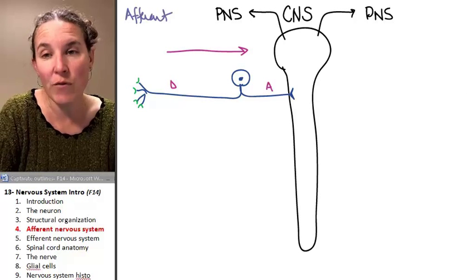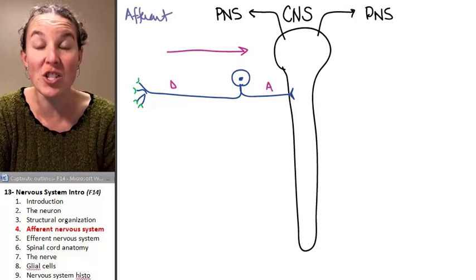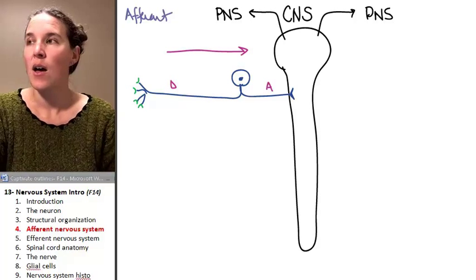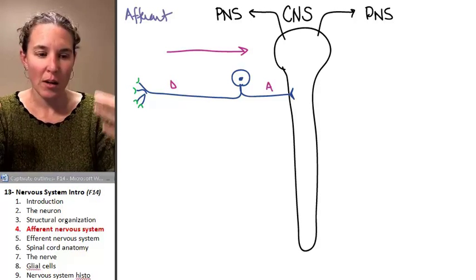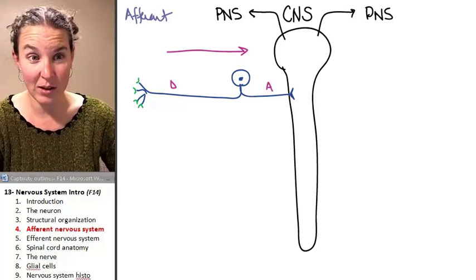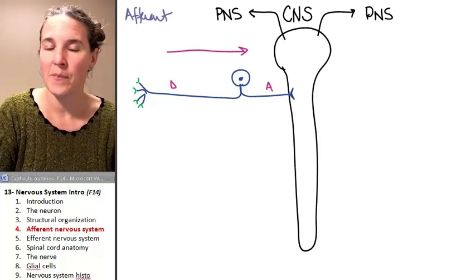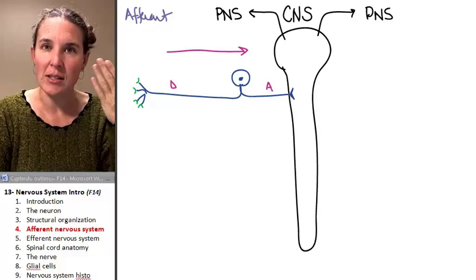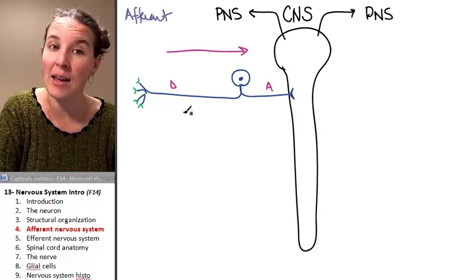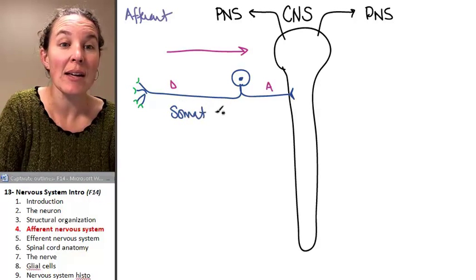If the information that is traveling in is conscious, if you're conscious of the information—that was a really pretty light, that's a really hot piece of metal on my hand, that is a cold room I'm sitting in—that information is conscious. I'm aware of that sensory information. And therefore, it has a label. It is somatic sensory.